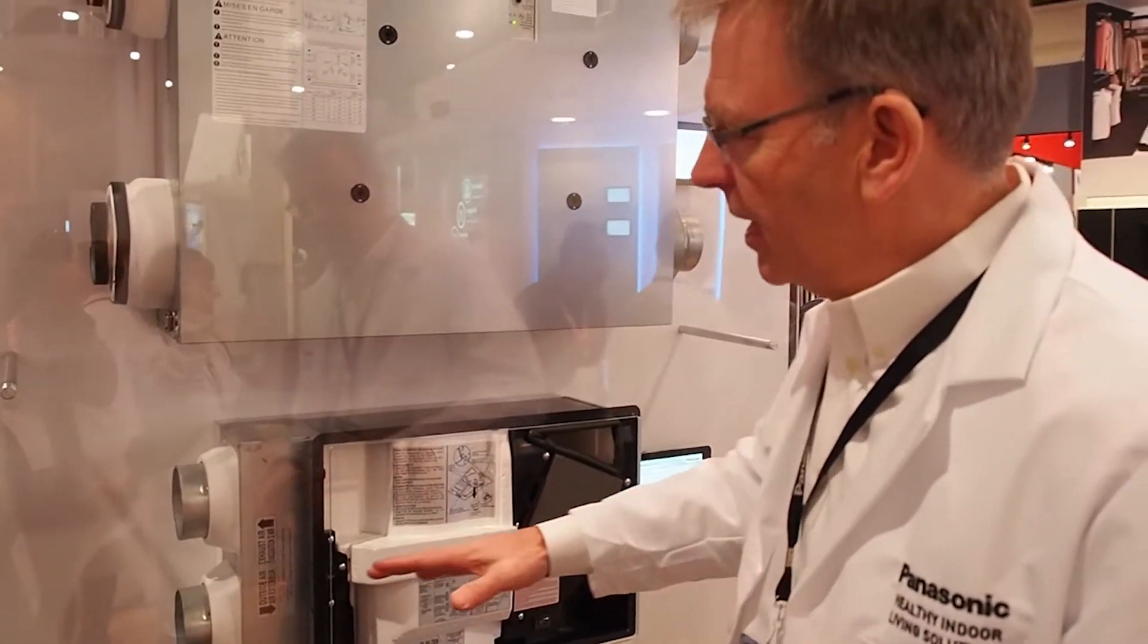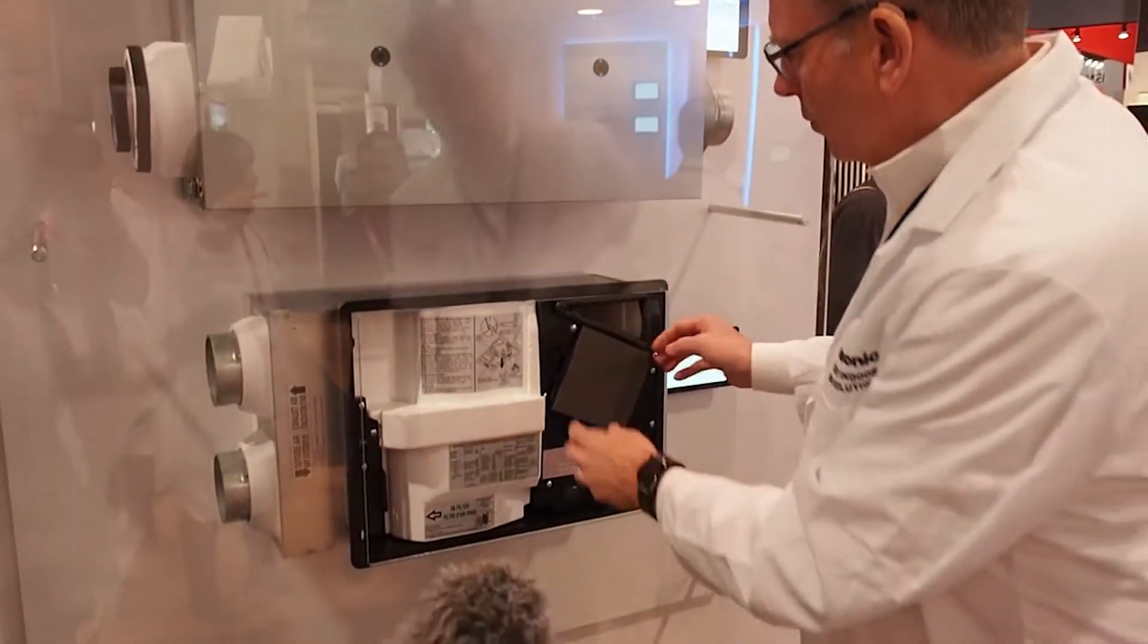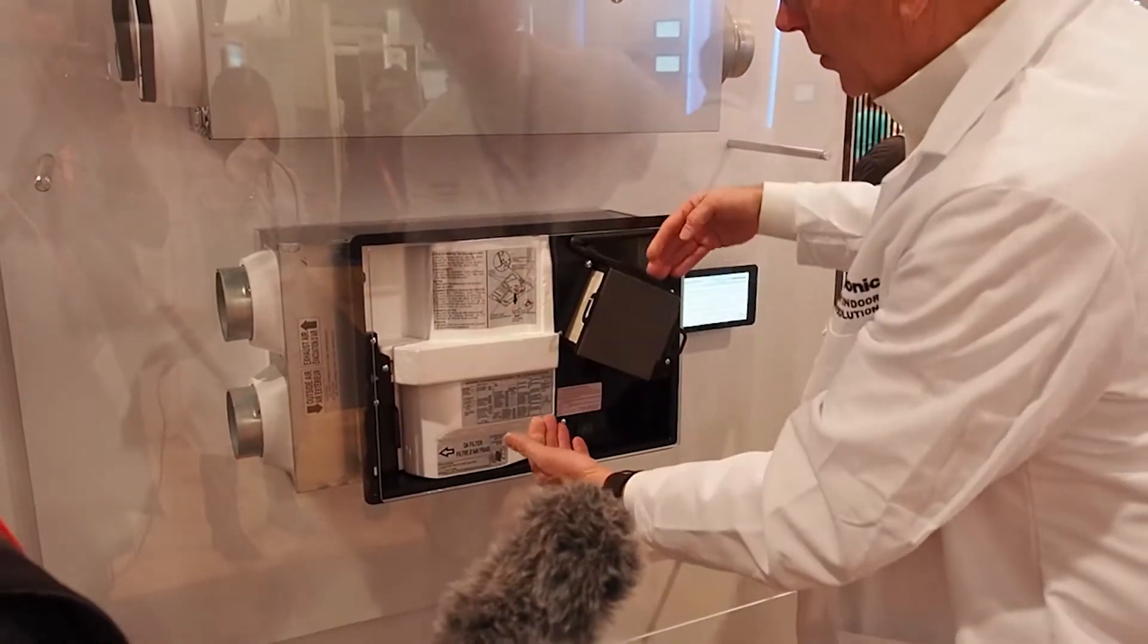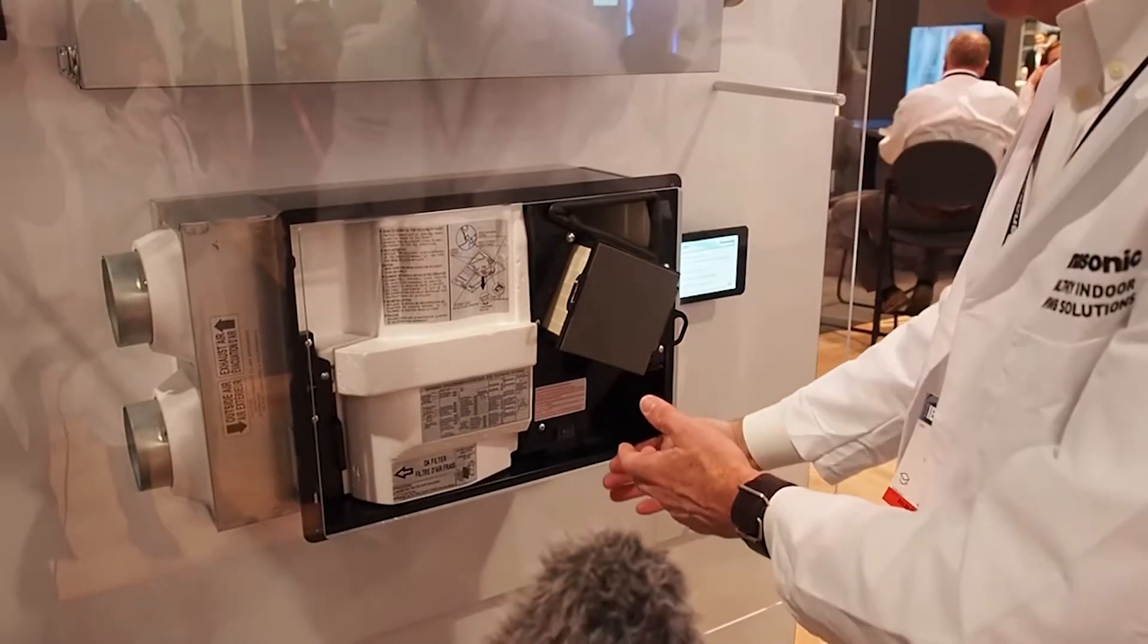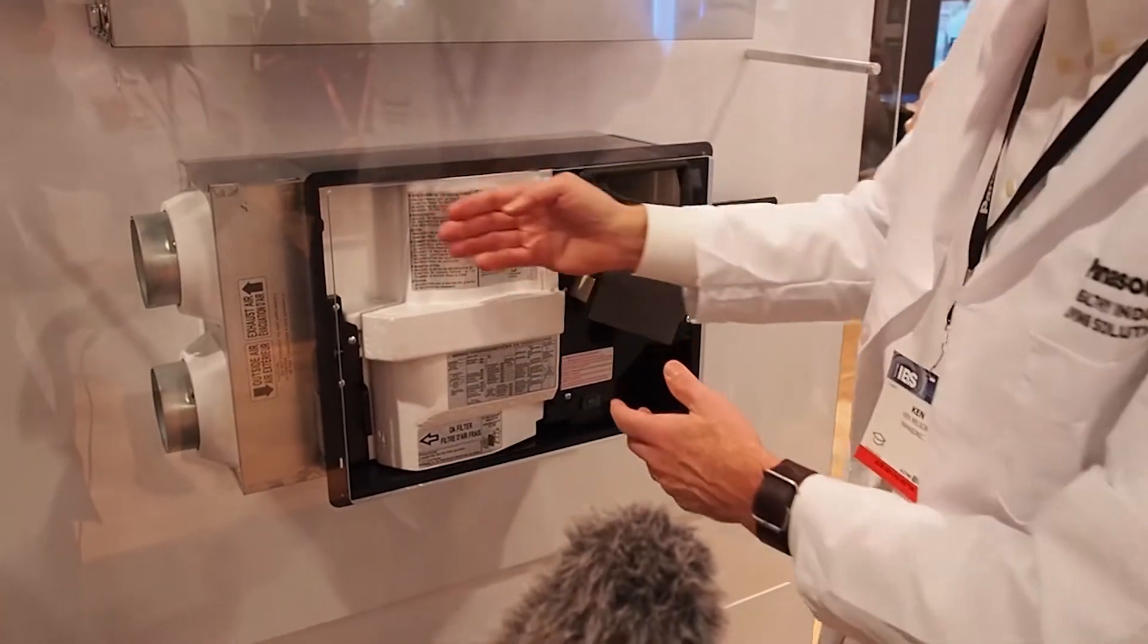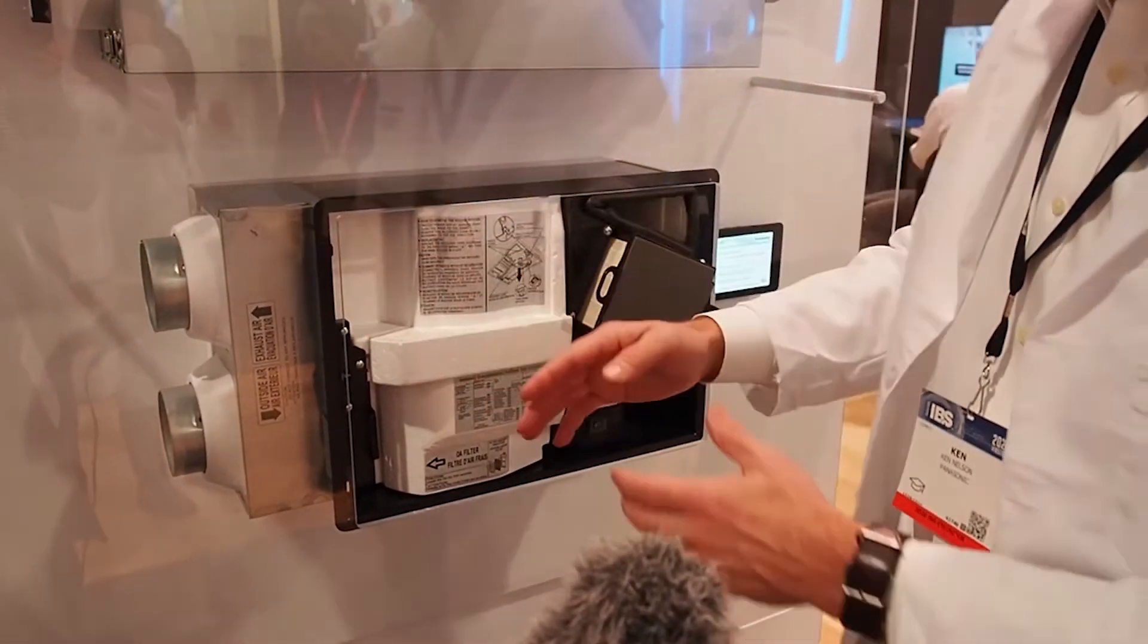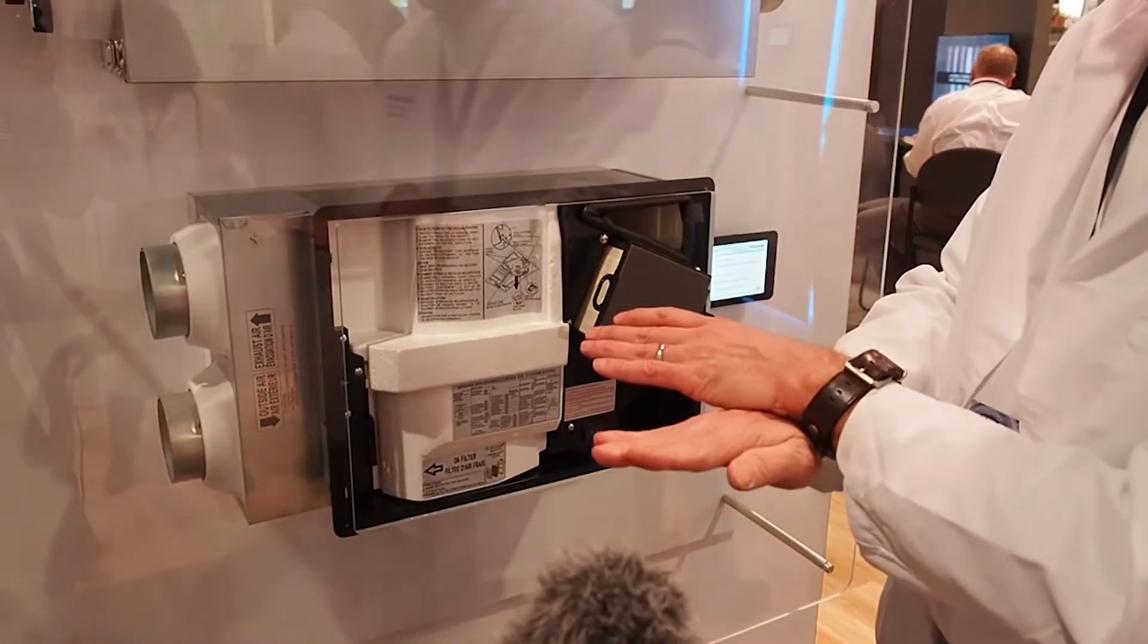And what it does is it takes outside air, brings the outside air, runs through a core exchanger where the two air streams, and it's injected into the house. And then this one comes out of the house, runs through this side, and it's pushed out of the house. So the two air streams pass but never touch.